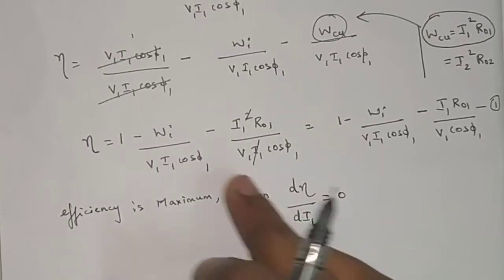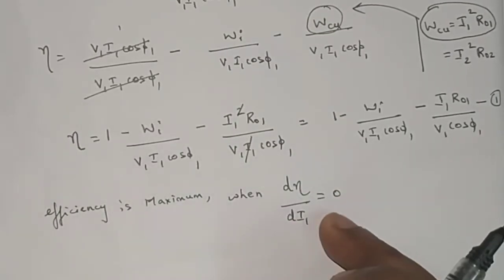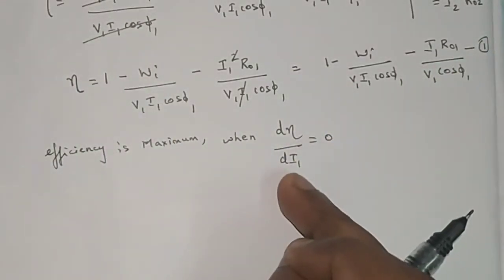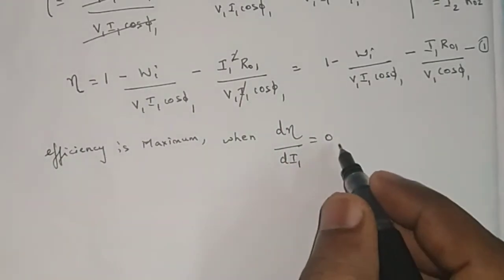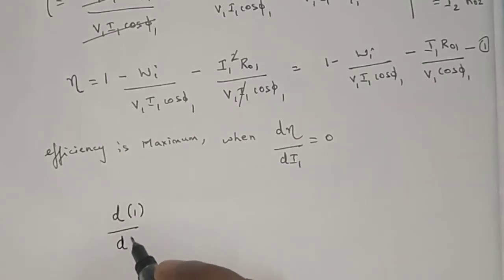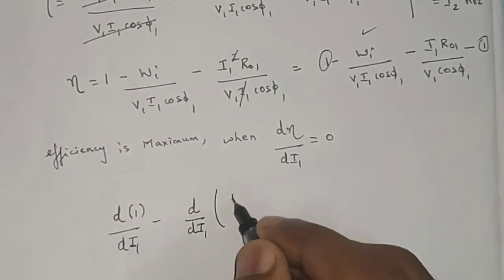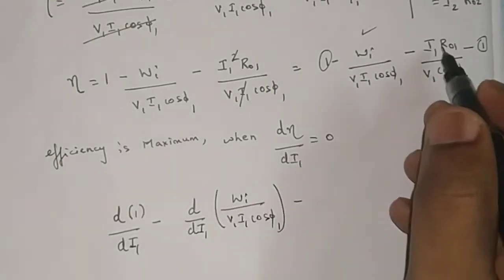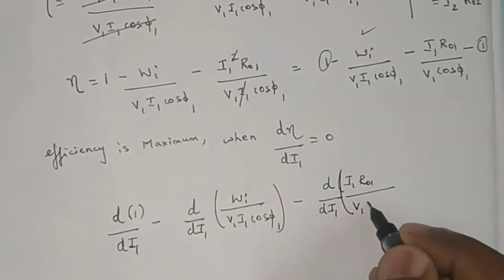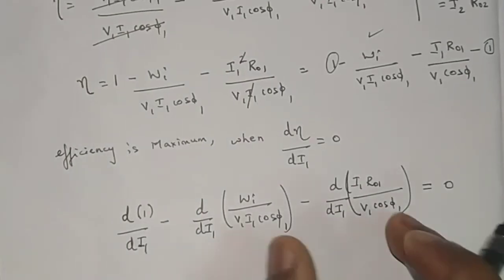The condition is: when you differentiate eta with respect to I1 and equate it to zero, that is when efficiency will be maximum. Now I will find out maximum efficiency by using this condition. I need to differentiate equation number one with respect to I1 and equate it to zero. While differentiating, there are three terms, so I need to differentiate individually: differentiation of 1 with respect to I1 as the first term, minus differentiation of iron loss divided by V1·I1·cos φ1 as the second term, minus differentiation of I1·R01 divided by V1·cos φ1 as the third term.